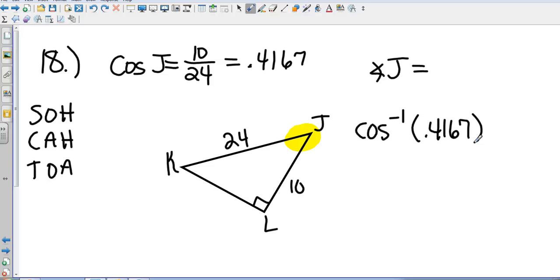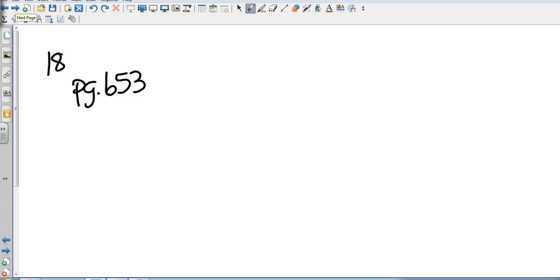They're going to ask you to round that to the nearest degree. So, we're going to call that 65 degrees. You can find examples like that on page 653.